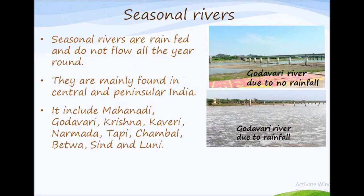Seasonal rivers are rain-fed and do not flow all the year round. They are mainly found in central and peninsular India and include Mahanadi, Godavari, Krishna, Kaveri, Narmada, Tapti, Chambal, etc.